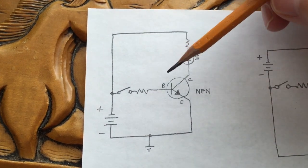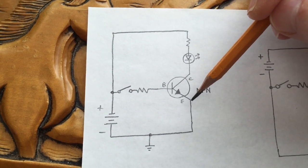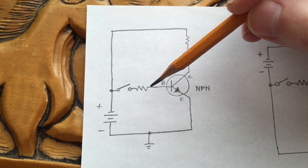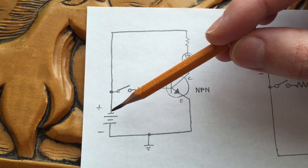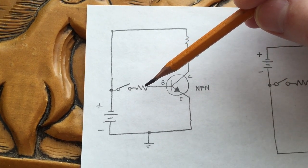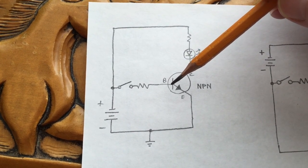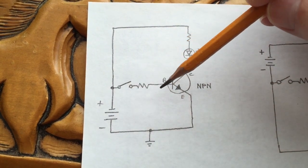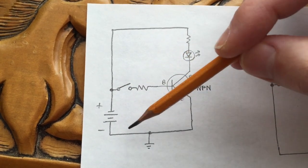In an NPN transistor, current flows typically from the base to the emitter in a switching configuration. In conventional current flow, current flows from positive to negative. Here we have a battery or voltage source with the positive terminal up top. If this switch is closed, current will flow through this resistor and into the base of the transistor, and to form a complete circuit, it will flow through the arrow and out the emitter, back to the negative terminal of the battery. This is our control circuit, and current flows in this direction when the switch is closed.